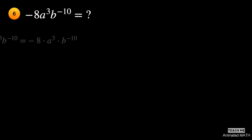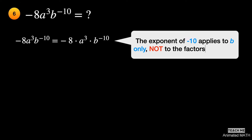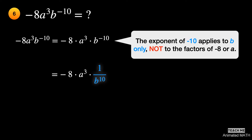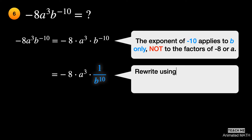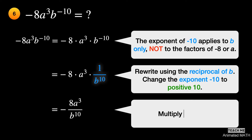The exponent of negative 10 applies to b only, not to the factors of negative 8 or a. Rewrite b raised to the negative 10 as 1 over b to the 10th power. Simplifying it will show negative 8a cubed over b to the 10th power.